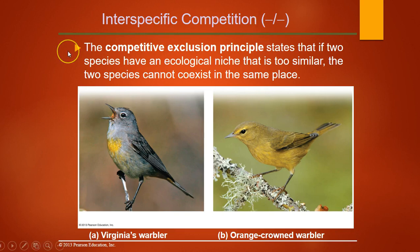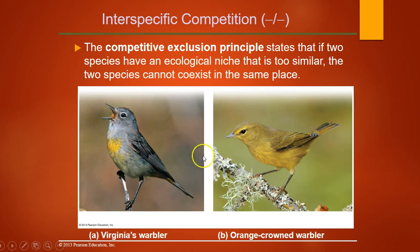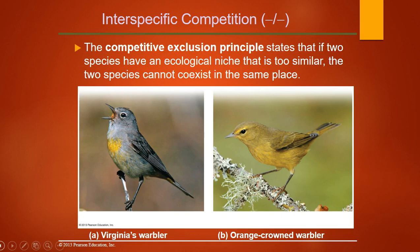Gause's competitive exclusion principle states that if two species' niches overlap too much, they can't coexist in the same place. For example, the Virginia's warbler and the orange-crowned warbler eat the same food and nest in the same trees — if they occupied the same space, one would out-compete the other. Similarly, if an invasive species comes in and overlaps too much with a native species, they will be in intense competition.